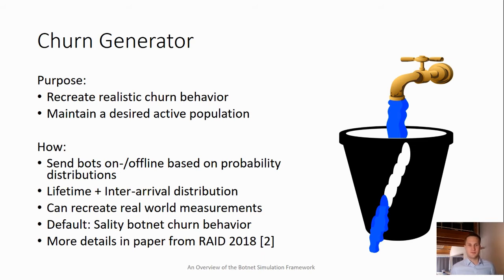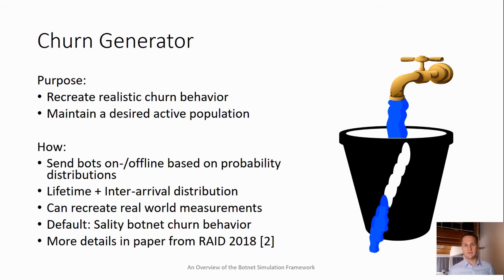Churn within a peer-to-peer botnet is a very crucial factor within the simulation. Apart from the protocol itself, churn determines how the overlay is constructed and therefore how quickly a message spreads within the network, how resilient the network is to node failures, and how resilient it may be to takedown attempts or sinkholing attempts by defenders. The purpose is to recreate realistic churn behavior as it would appear in the real world, while still giving us the opportunity to specify a desired active population — for example, if you want 5000 bots active at any point in time, the churn generator will maintain an average around 5000 active bots.